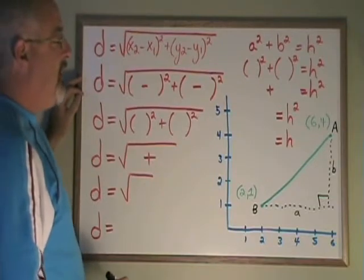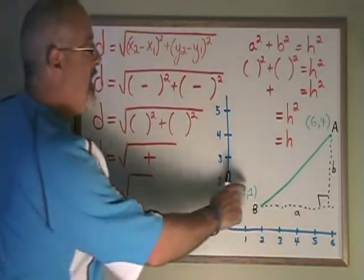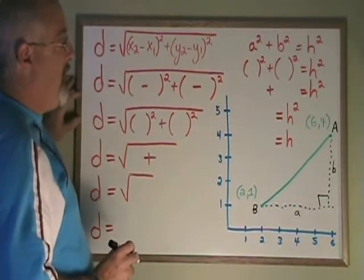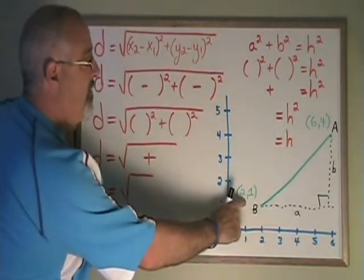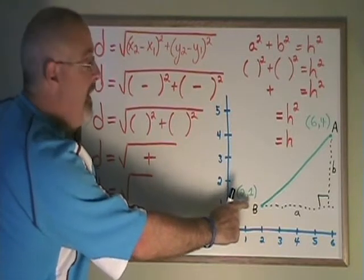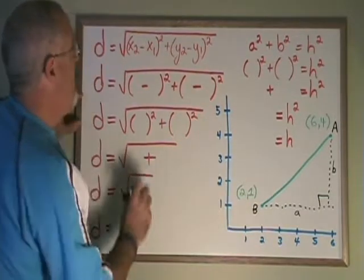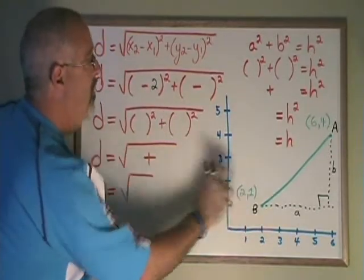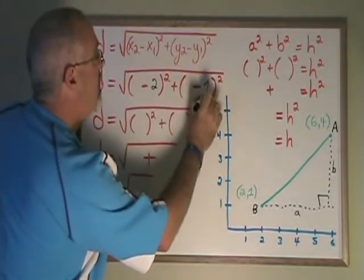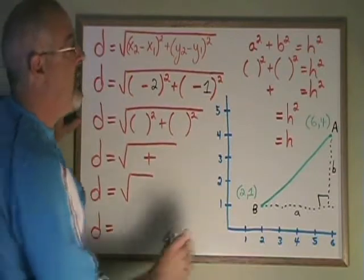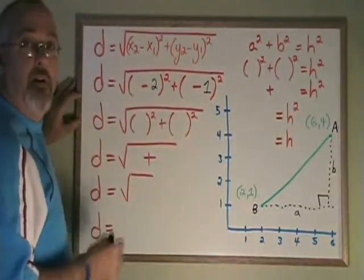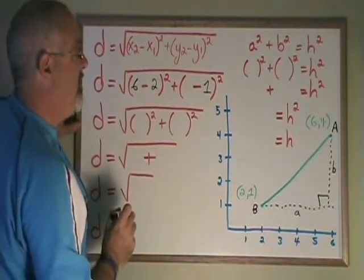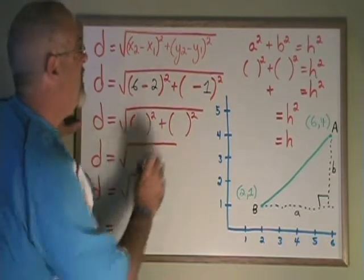Let's plug the x and y coordinates of point B and point A into the distance formula now and see what distance we get between them. If we call point B the first point, then our x1 is 2, our y1 is 1. Point A is therefore the second point and our x2 is 6, our y2 is 4.